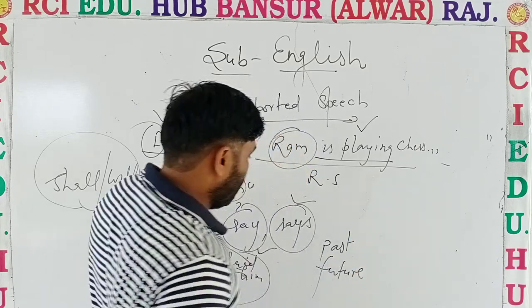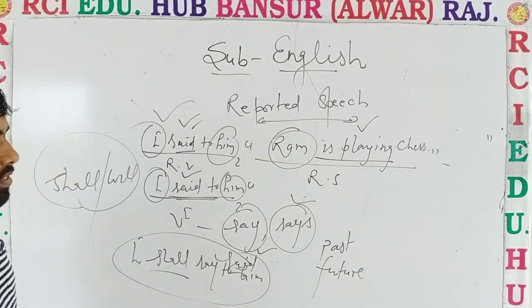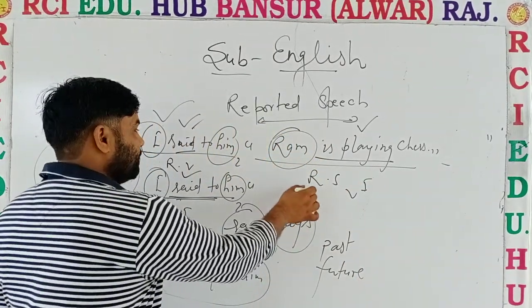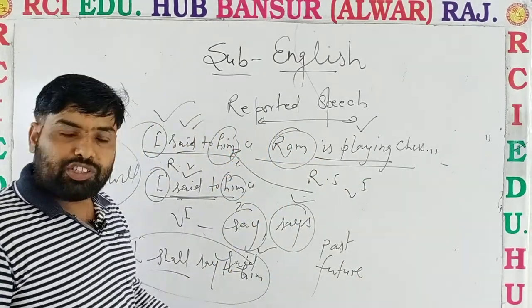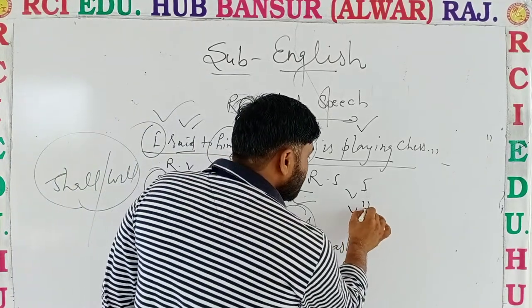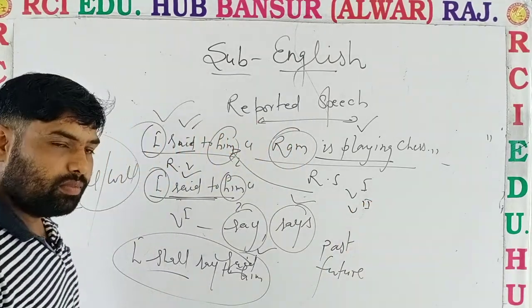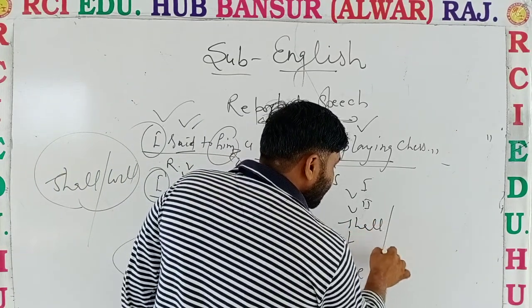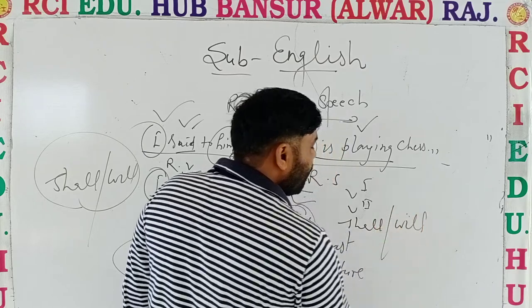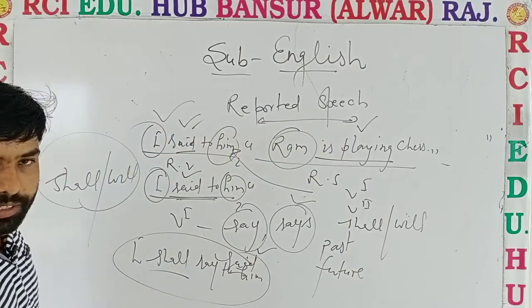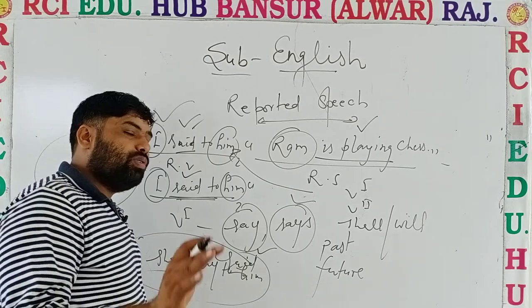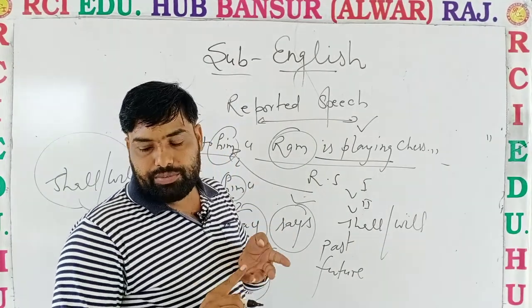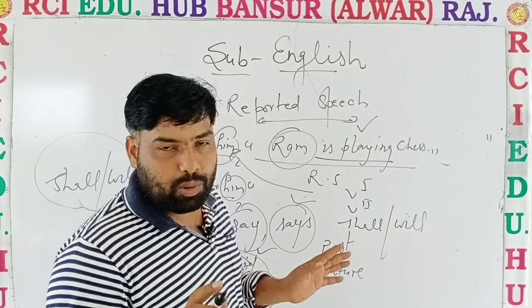So to summarize: if first form is given in the reporting verb, it is present tense. If second form is given, it is past tense. If 'shall' or 'will' is mentioned, it is future tense. I think every student got it — present, past, and future.